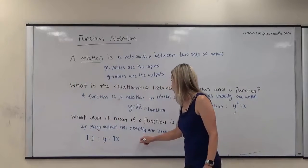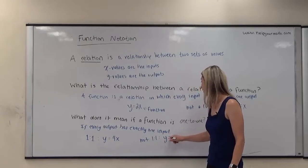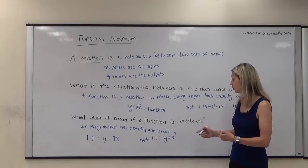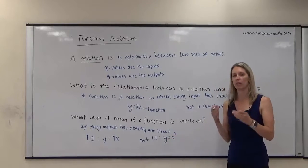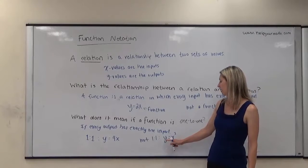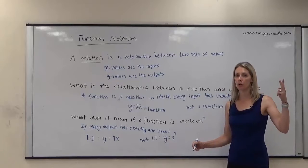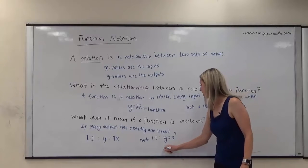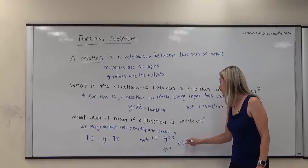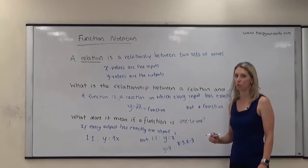An example of a function that is not 1 to 1 would be something like y equals x squared. Because while it is a function, no matter what I plug in for x, I can only get one y value, the reverse is not true. There is a number I can plug in for y. In fact, most numbers I plug in for y, there are two possible x values, such as if y is equal to 9. If y is equal to 9, then x would be 3, but x would also be negative 3. So therefore, this is not 1 to 1.